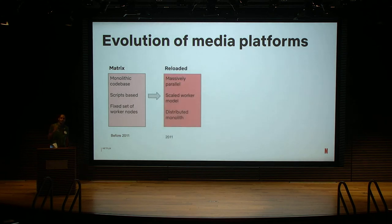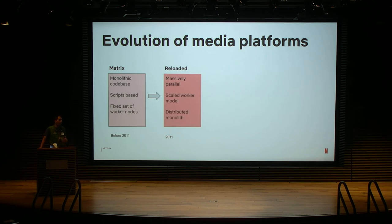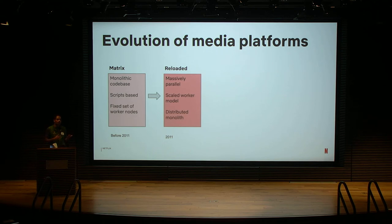From Matrix, we went on to Reloaded. Reloaded's focus was massively parallel and highly scalable architecture, coinciding with Netflix's cloud adoption. Reloaded was a massively parallel, scaled worker model with auto-scalers that watch backlogs and auto-scale. Reloaded even uses trough compute — unused reservations in Netflix when other parts of the business aren't using the compute — for encoding. It was a distributed monolith, with one CI/CD system and deployment distributed from one repo into multiple applications: video encoder, audio encoder, subtitle processor, inspectors — all from one monolith codebase.